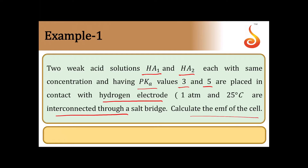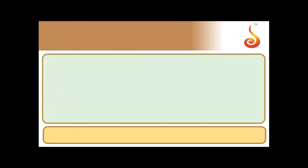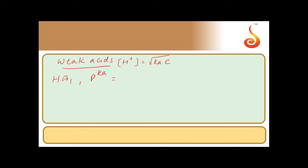We require the concentration of H⁺ ions from both half cells. Since these are weak acids, we need to find the concentration of H⁺ from each. For weak acids, the concentration of H⁺ is given by the formula: root of Ka times C. For the first acid HA1, the value of pKa is given as 3.